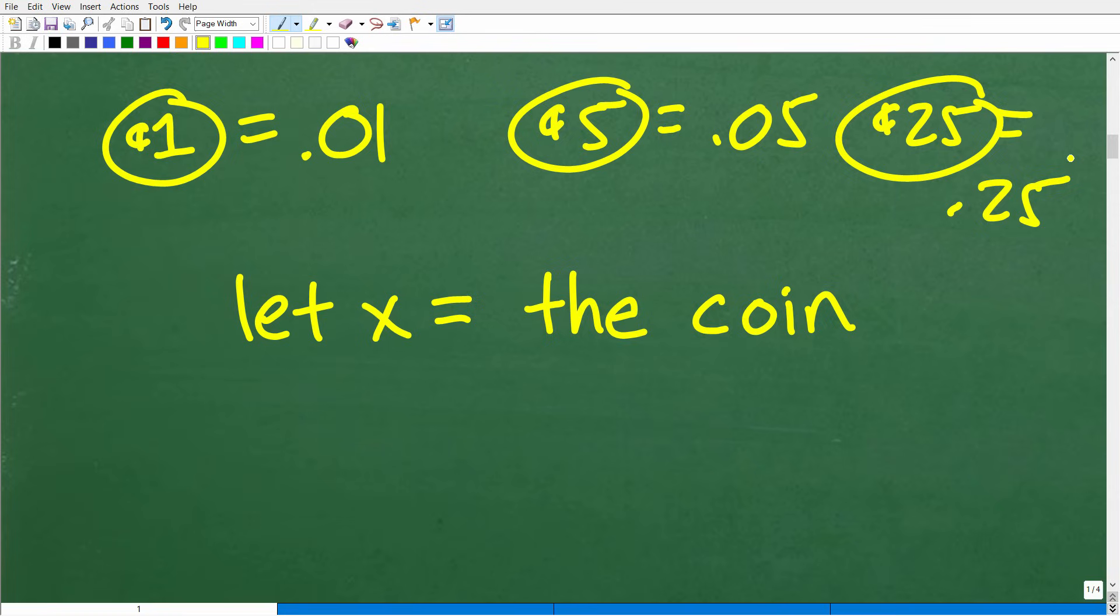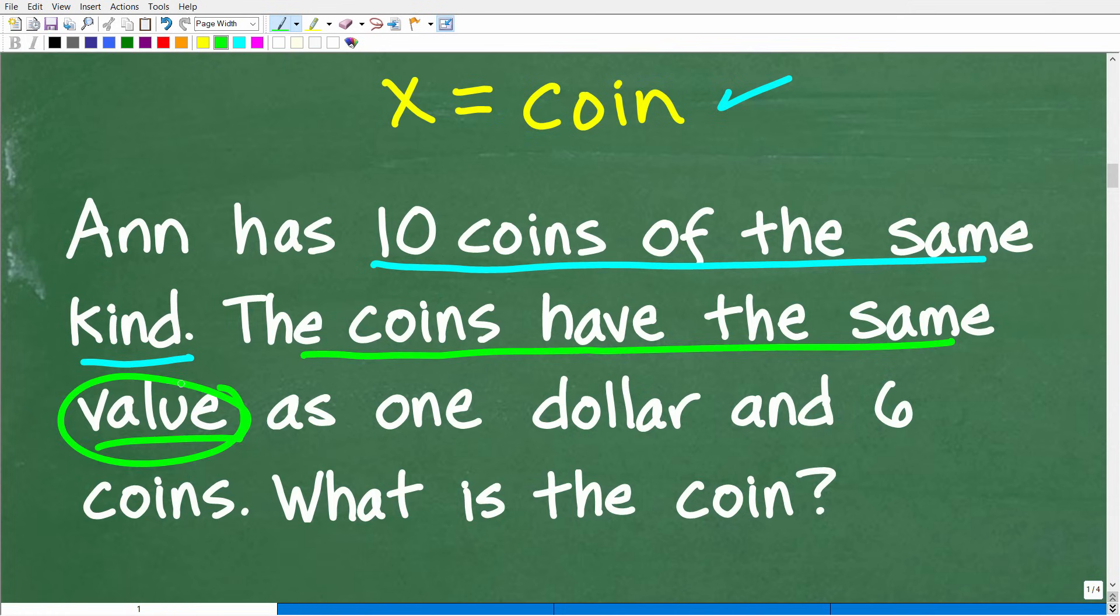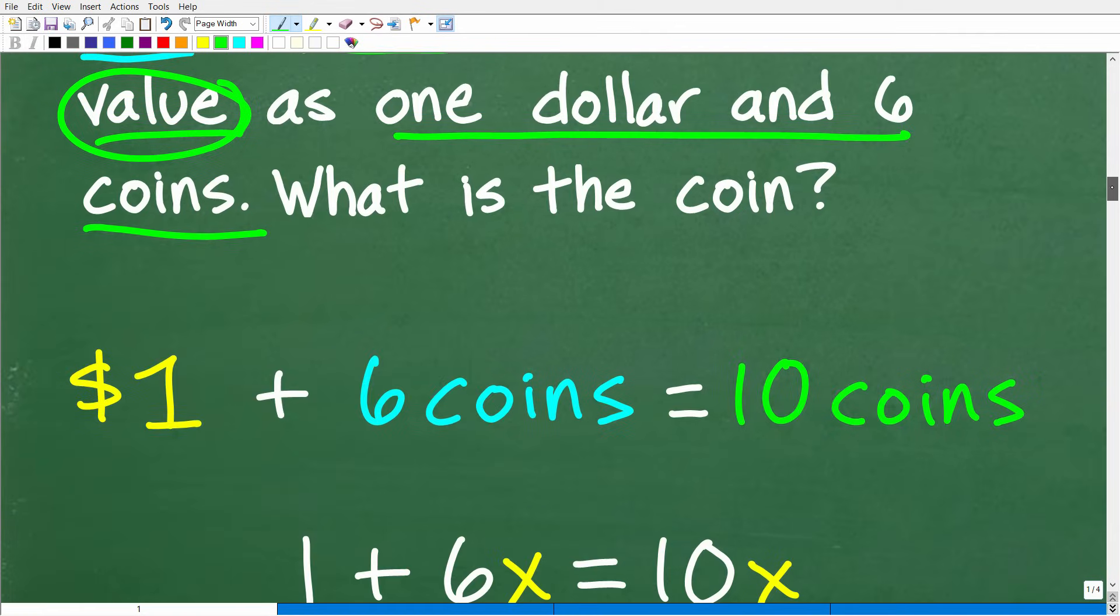So we're going to let this variable X represent the coin or the value of the coin. All right, now what are we going to do with this? Well, if we have a variable, we can't do anything with this variable unless we construct an equation to solve for the variable. So how do we do that? Well, we're going to have to go back to the problem. And although we've read the problem multiple times, once we have a strategy, like, okay, I'm going to let X equal the coin, I now have to read the parts of the problem that apply here.